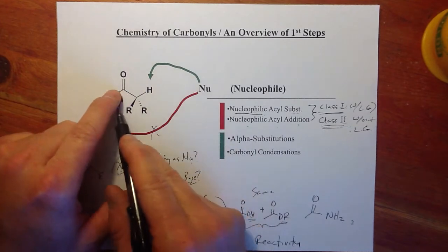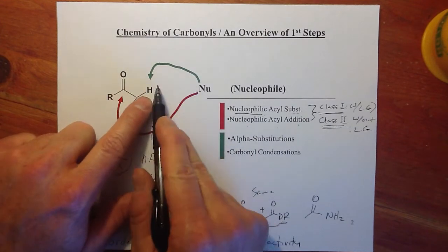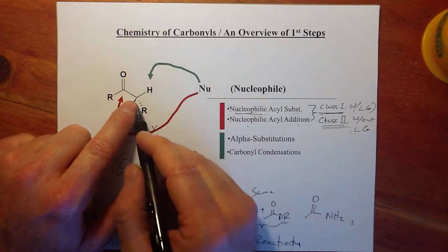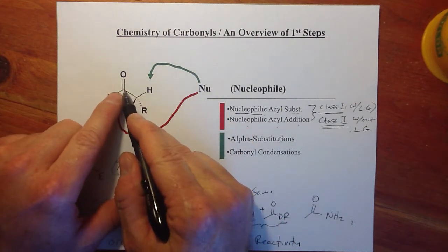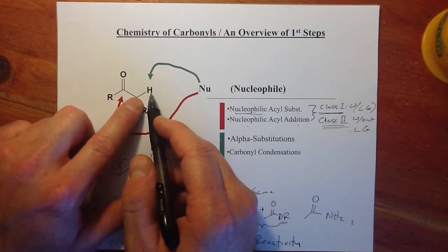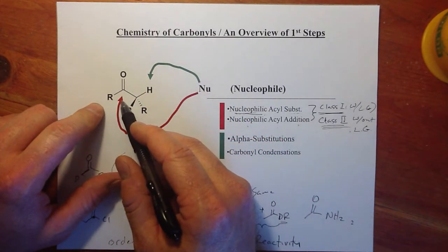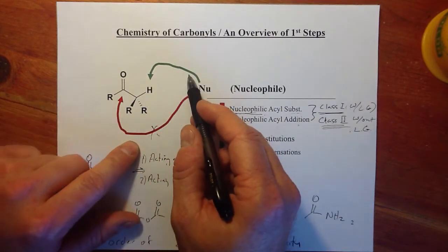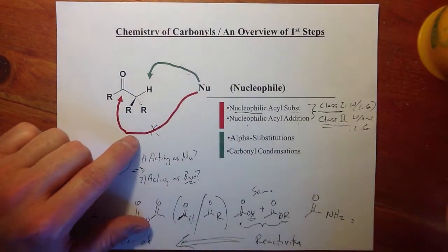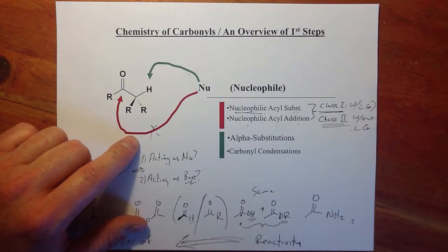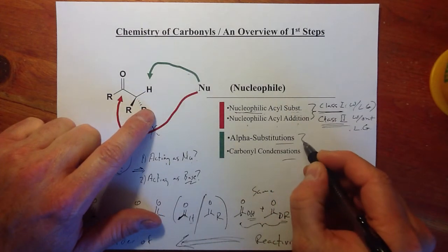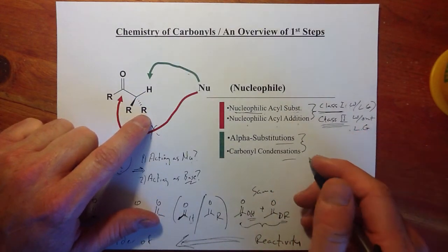Now we want to focus not on attacking the carbon as a nucleophile, but on attacking the proton — called the alpha proton — that's on the carbon next to the carbonyl. Attacking that proton, starting by attacking as a base as compared to attacking as a nucleophile — these are in competition with each other. If we look at that as a first step, we're starting to consider enol and enolate chemistry.